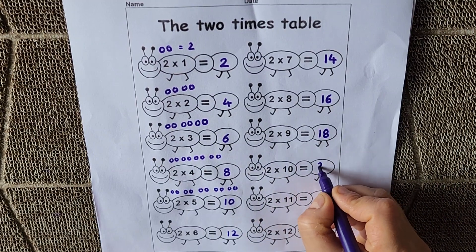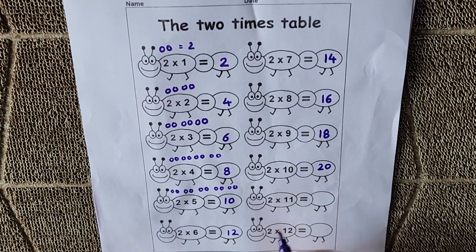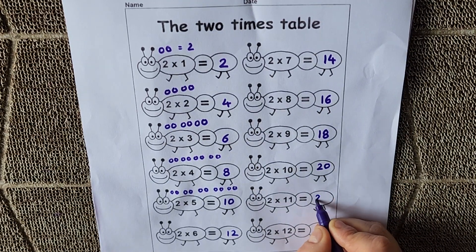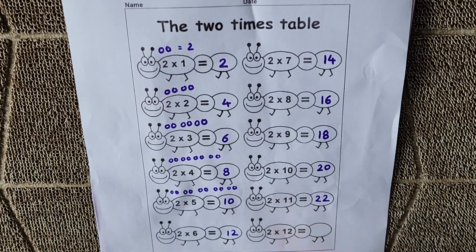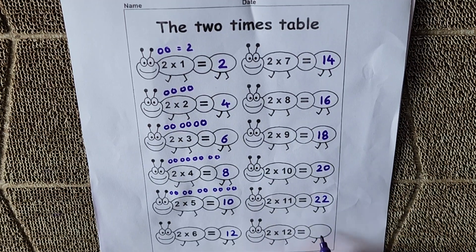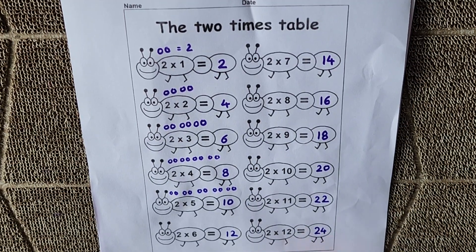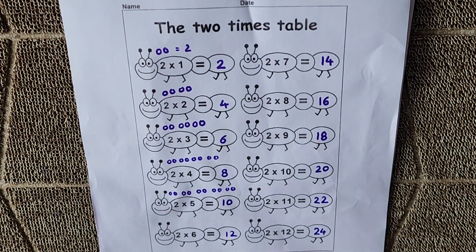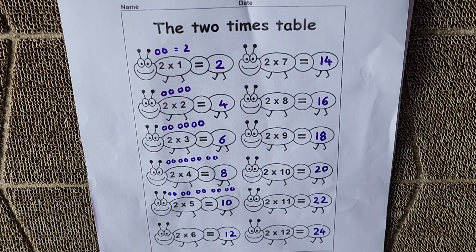2 10s are 20. 2 11s are 22. 2 12s are 24. Like, 2 balls how many times? 12 times. So total number of balls are 24.